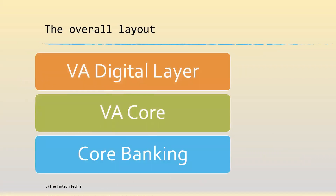This is how the overall layout looks like. At the base, we have the core banking or the DDA where the real accounts are housed. On top of it is the virtual account core, the back office, which houses the virtual accounts. And on top of that, we have the digital layer, or the mobile banking or the internet banking layer, which is used by the corporates to create virtual accounts by themselves without relying on the bank staff.